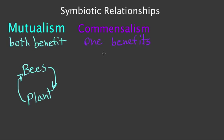Our example for commensalism will be a shark and a type of fish called a remora. A remora has a sucker on its head, and it can hitch a ride on the shark using this sucker. Also, whenever a shark eats something, the remora can get all of the shark's leftover food. So the shark is unaffected, but the remora is able to benefit. That is commensalism.